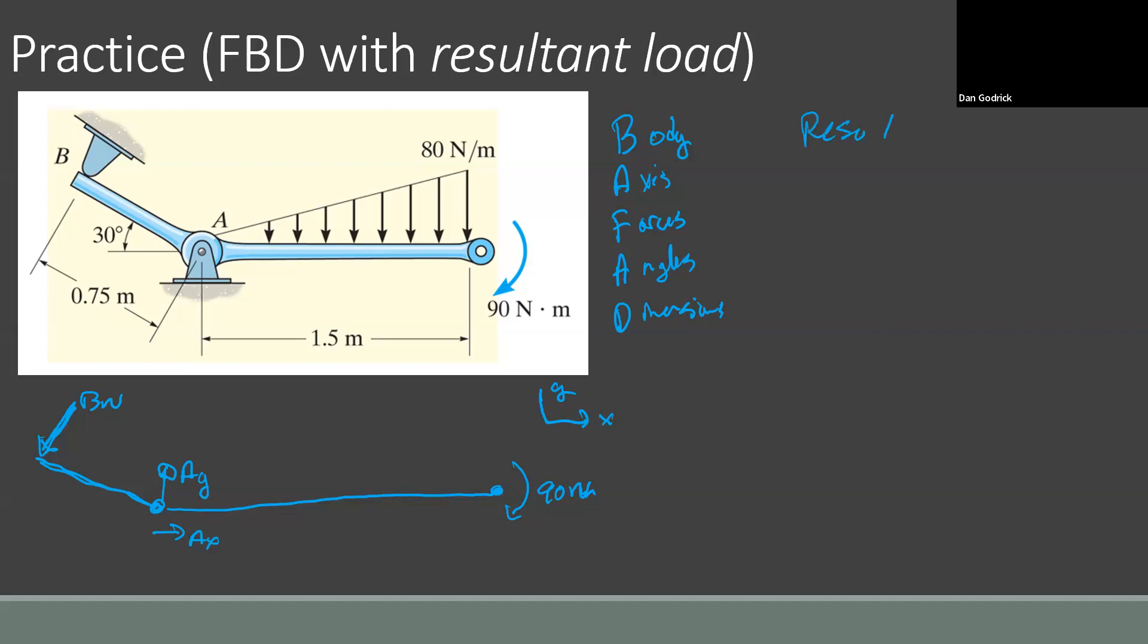And our resultant force, with this distributed force, we'd know that the area gives us the force, so that's one half base, 1.5 meters, times height, 80 newton meters, or 80 newtons per meter. Meters cancel, and we get 60 newtons. So draw that on. And so where does that act? Well, we know for a triangle, it acts a third of the way from the heavy end, so it acts right about there. And so one third of 1.5 meters is 0.5 meters.